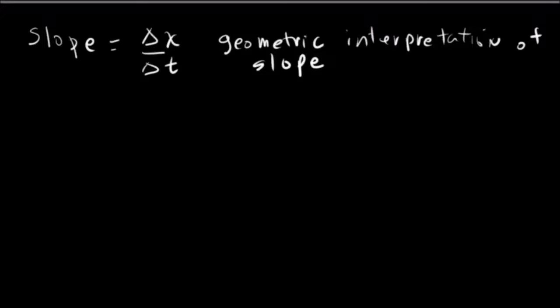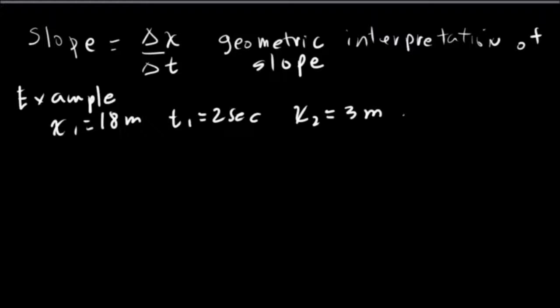So let's look at some examples. Let's put some numbers to some of this. In this case we're going to say x1 is equal to 18 meters, time 1 is going to be 2 seconds. x2 is going to be 3 meters at t2 equal to 7 seconds. So we want to know the displacement. How far did this little particle go?